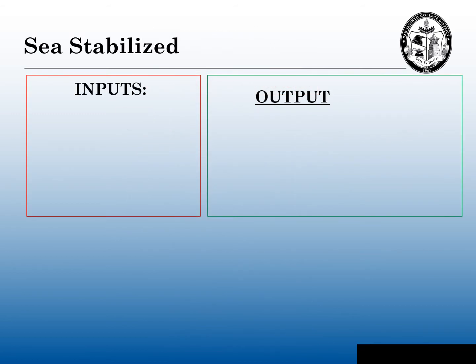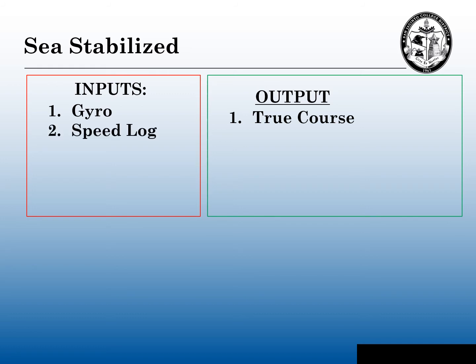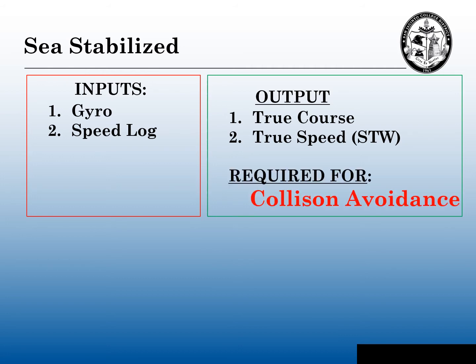For sea-stabilized radars and ARPAS, the required inputs are going to be a gyro compass, which gives us an output of a true course, and a speed log, which gives us true speed or speed through the water. This is required for collision avoidance — this is what the navigation rule book is based on: true courses and true speeds.